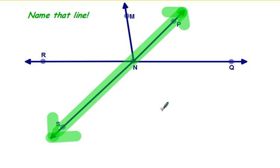Name this line. We would name this line line PS or you could call it line SP. Be sure to put the symbol above it and make sure that there are arrows on both ends.